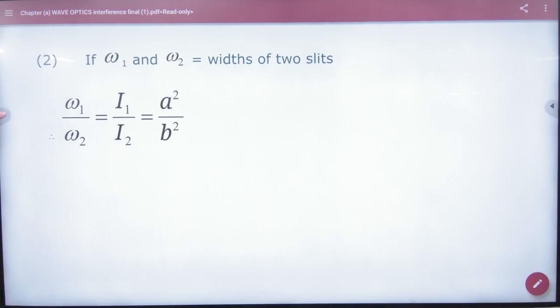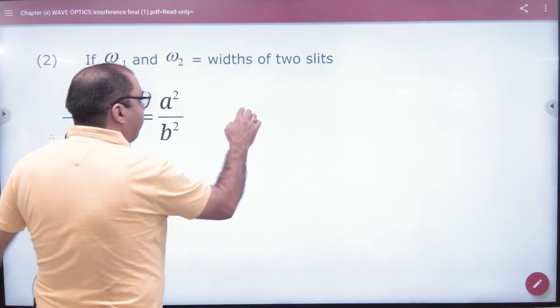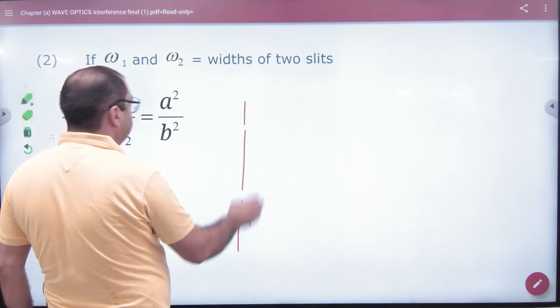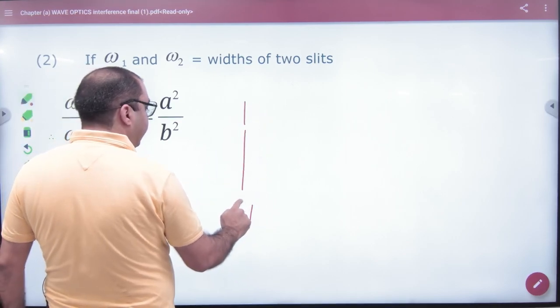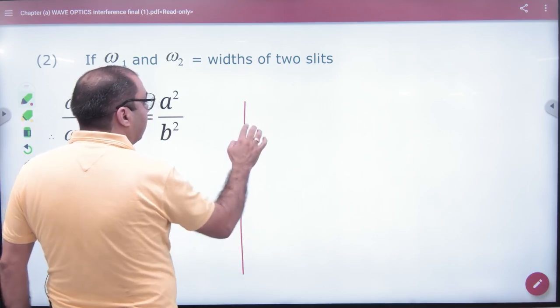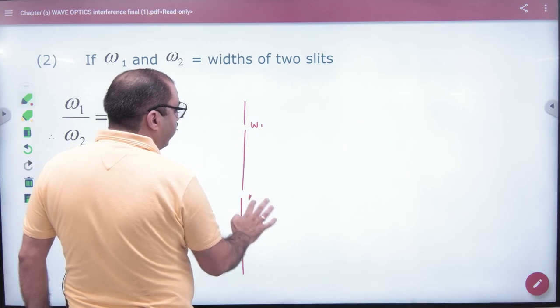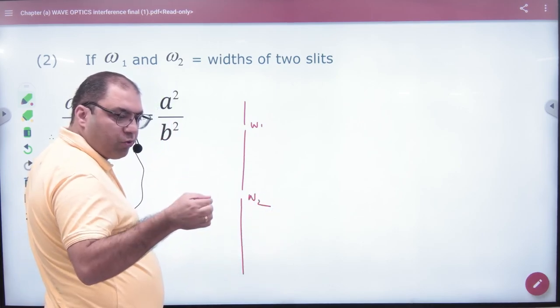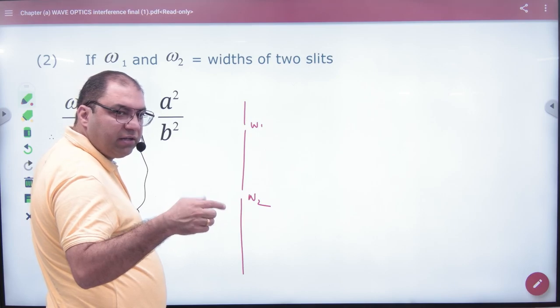If you consider two slits in YDSE, one's width is W1 and one's width is W2. As much as the width, the intensity of light will be so much.